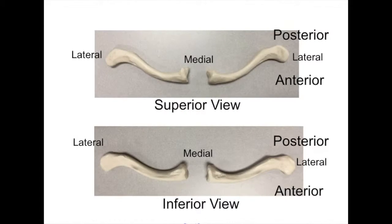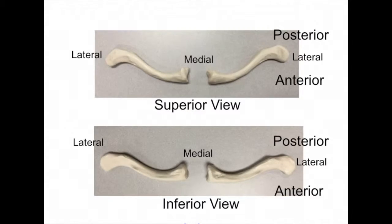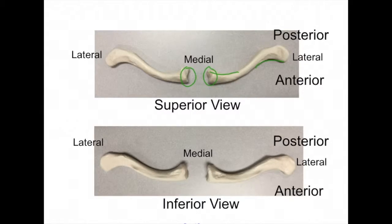In this slide, we will go over the structures of the clavicle. The clavicle, also known as the collarbone, is a slender, doubly curved bone, which is convex forward on its medial two-thirds and concave laterally. The medial end, or the sternal end, is located here, and attaches to the sternal manubrium.